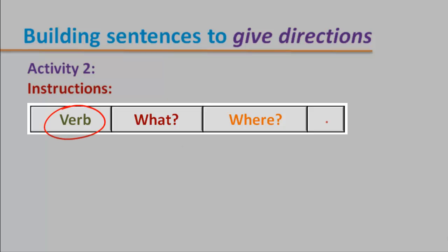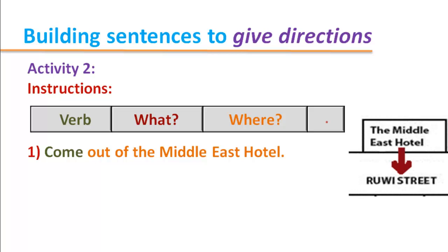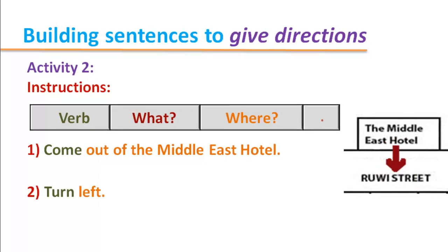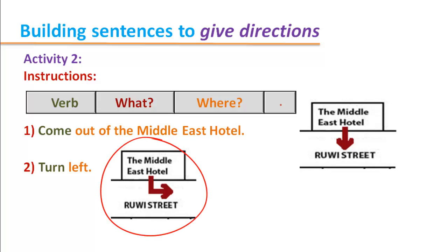This is the structure we will follow: first we will start with a verb, like 'come out,' 'turn left,' 'go straight,' then we give what, and after that where. Instruction one: come out of the Middle East Hotel. Here is the picture — this is the Middle East Hotel, just beside Rui Street. So we come out from the hotel first, then we turn left.